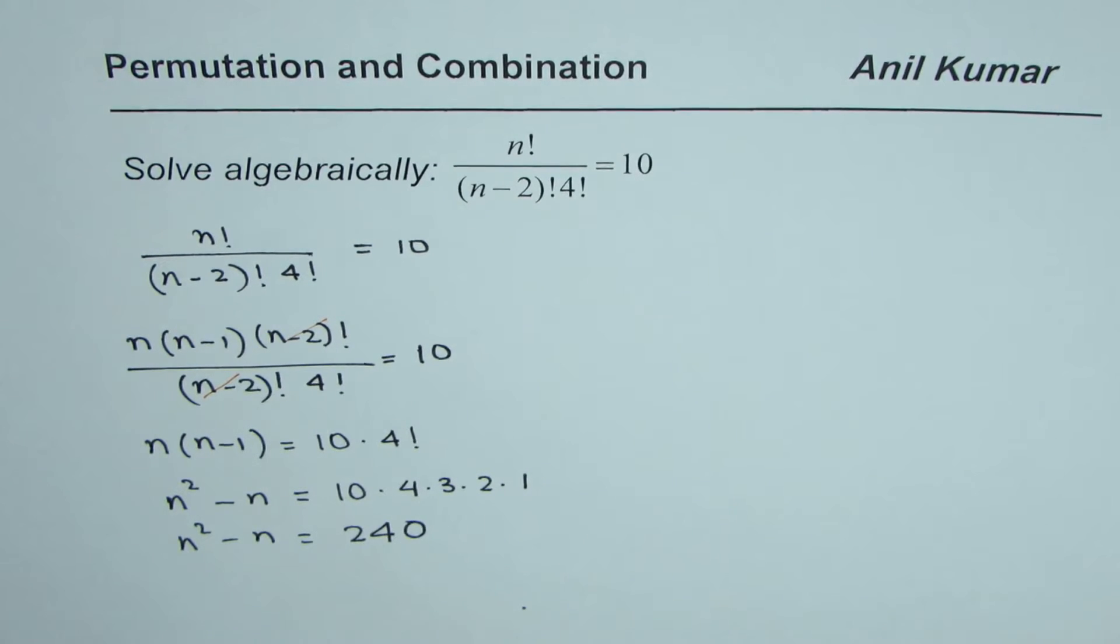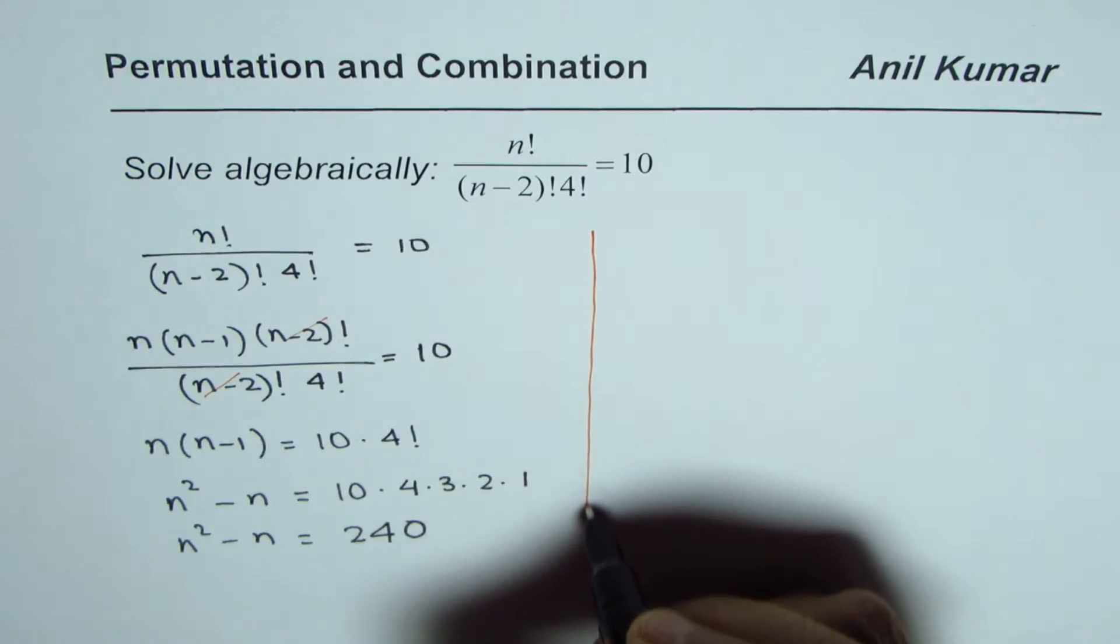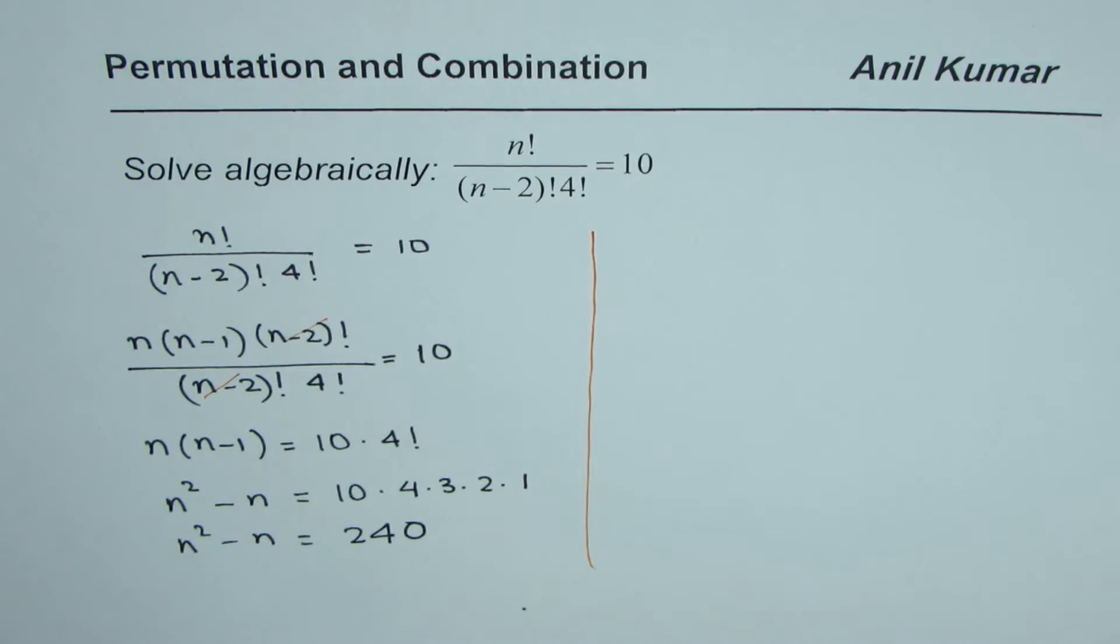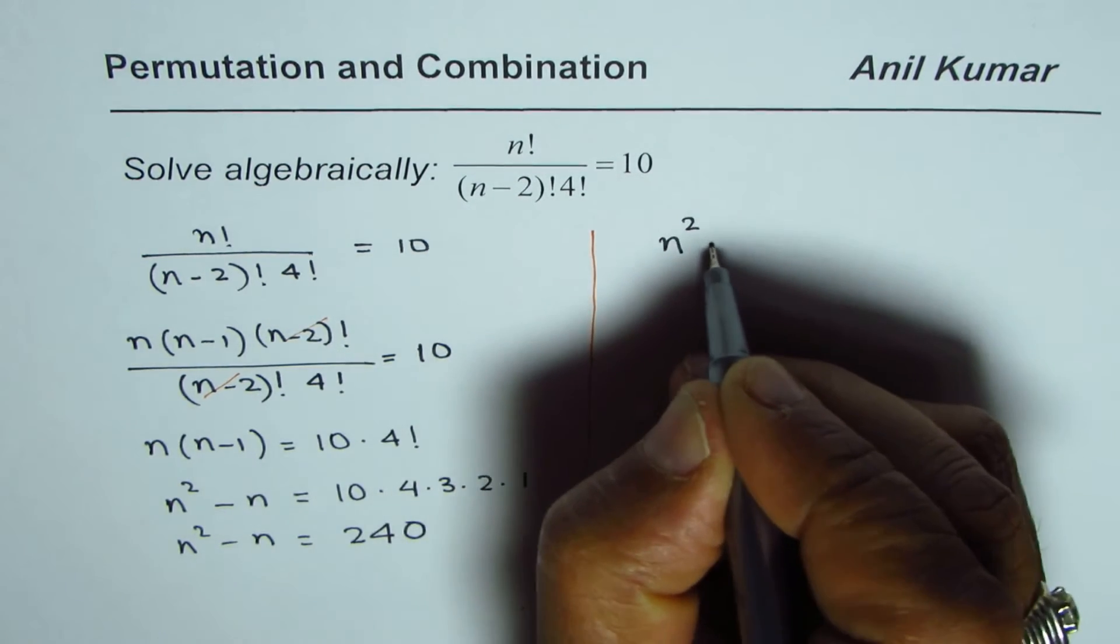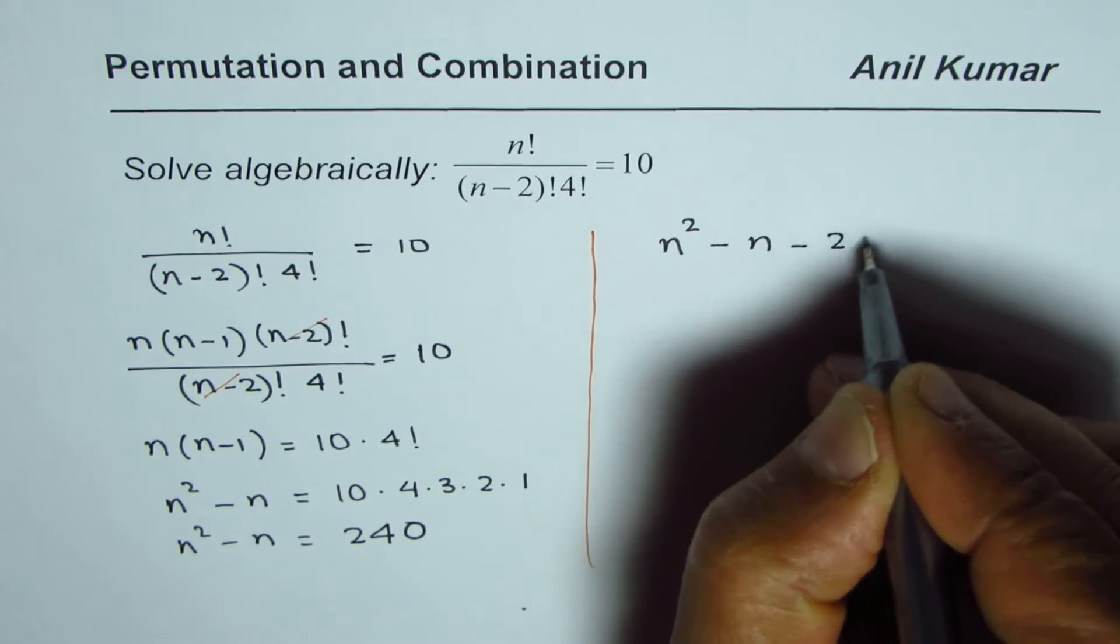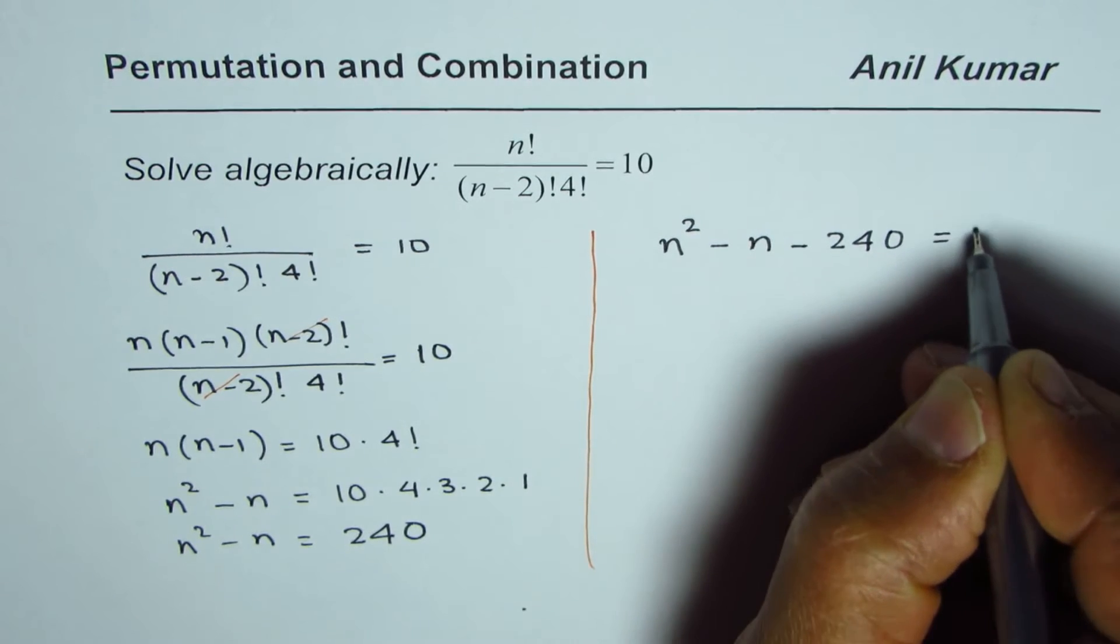We have an equation which is, let's bring 240 to the left side, n square minus n minus 240 equals to 0.